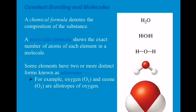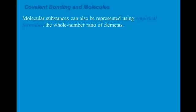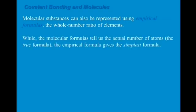The structural formula shows not only the elemental composition but also the general arrangement — the angles and distances between elements. Molecular substances can also be represented using the empirical formula, also known as the simplest form of the molecular structure, where you find the whole number ratio of elements. The molecular formula tells us the true number of atoms, while the empirical formula gives us the simplest form.